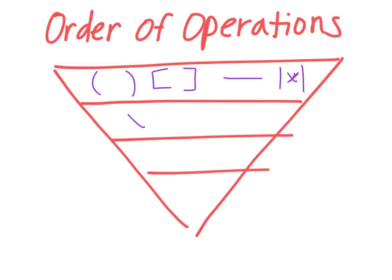The second thing you want to look for are exponents — so you might have something squared or cubed — and square roots or cube roots. And if you do have one of these things, you also need to follow the order of operations inside of there. So inside a square root symbol or inside parentheses, follow the order of operations.